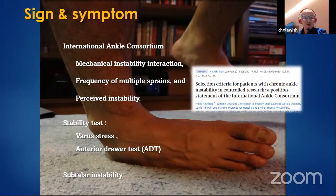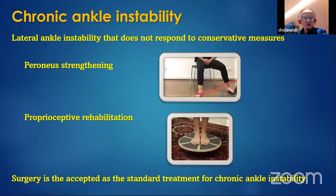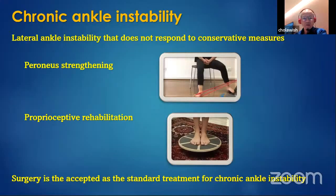The common examination tests for stability include the anterior drawer test and the talar tilt test, and you also need to consider subtalar instability testing. For chronic ankle instability, conservative treatment is the initial approach. Peroneal strengthening and proprioceptive rehabilitation is the common protocol for conservative treatment. In cases where conservative treatment fails, surgery is accepted as the standard treatment for chronic ankle instability.